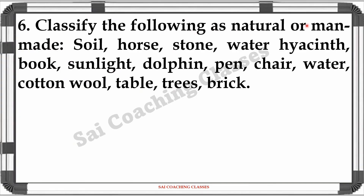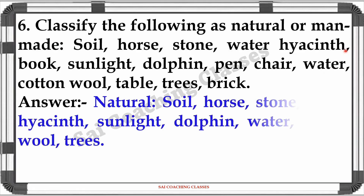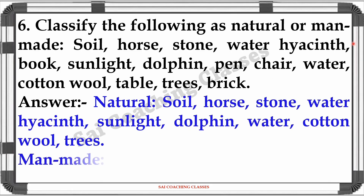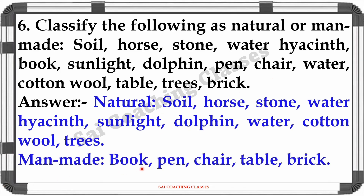Question 6: Classify the following as natural or man-made: soil, horse, stone, water, sunlight, book, dolphin, pen, chair, cotton, cotton wool, table, trees, brick. Answer - Natural: soil, horse, stone, water, sunlight, dolphin, cotton wool, trees, etc. Man-made: book, paint, pen, chair, table, brick.